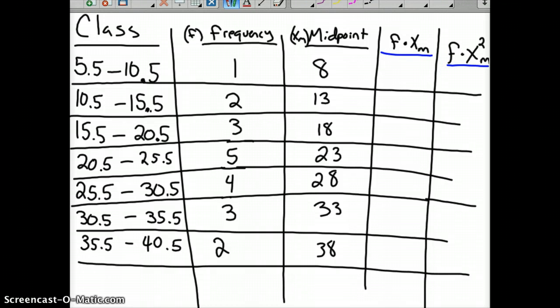We're going to take our frequency times our midpoint, and I call midpoint x sub m. So this first one, frequency times midpoint would be 1 times 8, which is 8. The next one is 2 times 13, which is 26, and then 3 times 18, which is 54, and 5 times 23, which is 115.